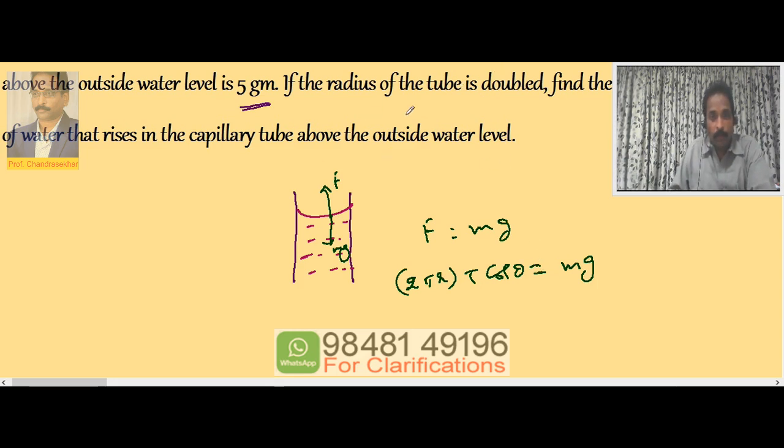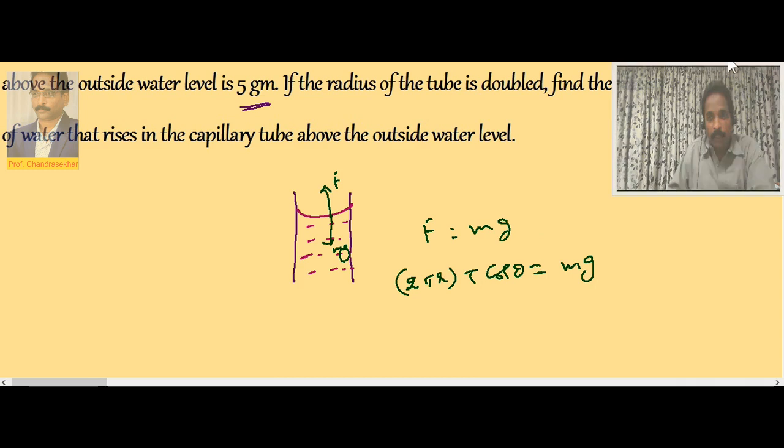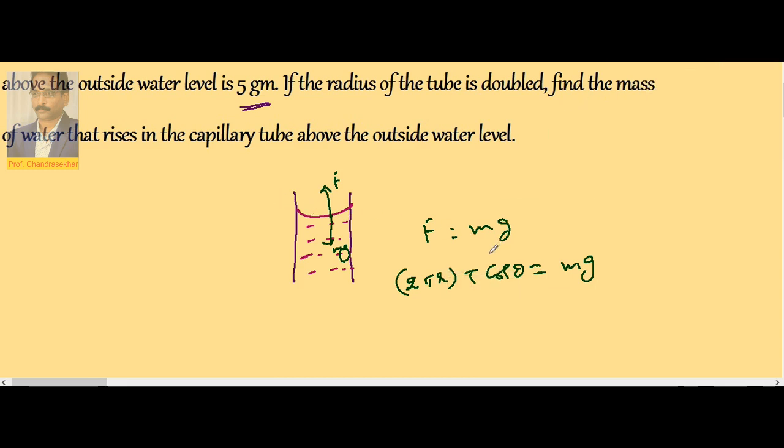So if we go through the problem, the radius of the tube is doubled and remaining things are same. So T cos theta is same, T same, 2 pi constant.